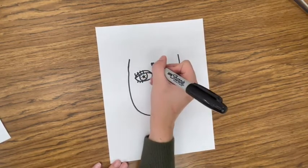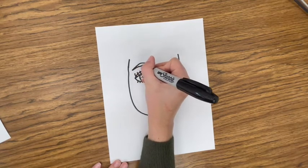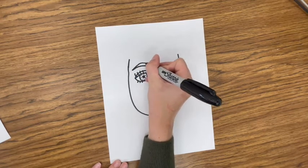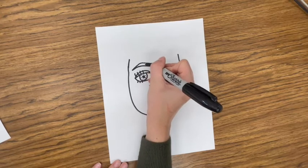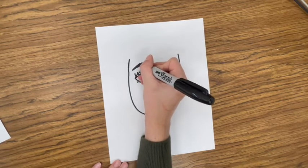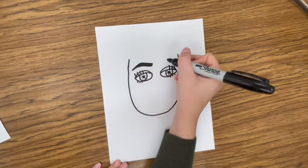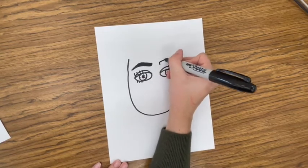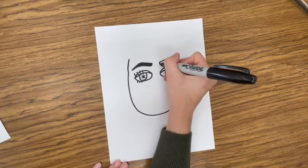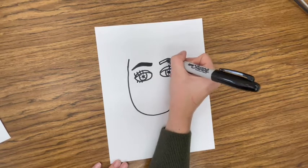Eyebrows are very important. Eyebrows are good in a portrait to tell you how the person's feeling. Your eyebrows, if they're really high up, means you're surprised. If they're like scrunched in, that might mean that you're worried or angry. I'm trying to make mine just kind of neutral.